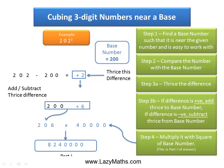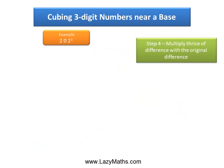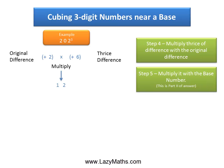For part 2, we go back to the original difference which was positive 2, and then we multiply thrice the difference, which is positive 6, with the original difference positive 2. So we get 2 times 6 is 12. Then we multiply 12 with the base number 200 and we get 2,400. And 2,400 becomes part 2 of the answer.